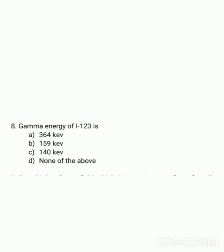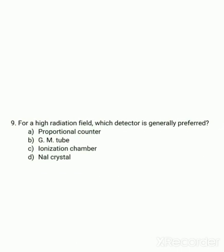The eighth question: the gamma energy of Iodine-123 is 159 keV.